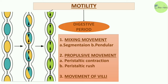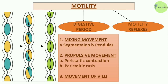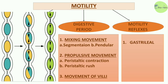The last category of motility is motility reflexes. The gastro-ileal reflex refers to a marked increase in peristaltic contractions of the ileum associated with relaxation of the ileocecal sphincter, occurring immediately after a meal — caused by reflex stimulation of the vagus. The intestinal reflex refers to relaxation of smooth muscles of the rest of the small intestine in response to overdistension of one segment.